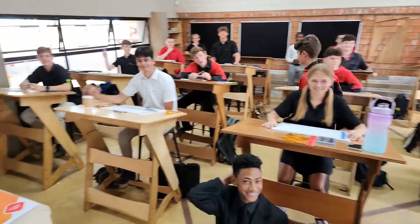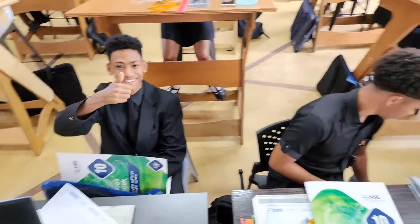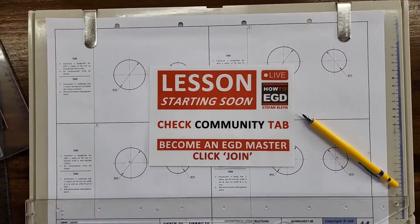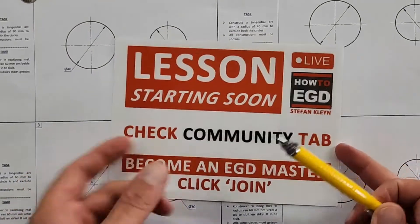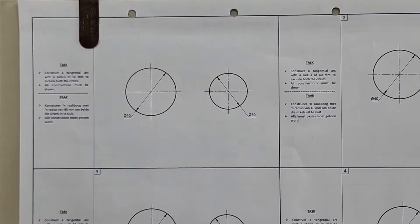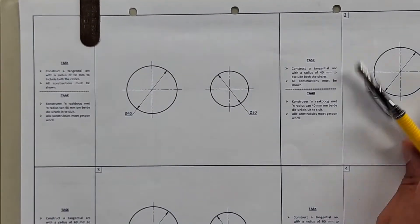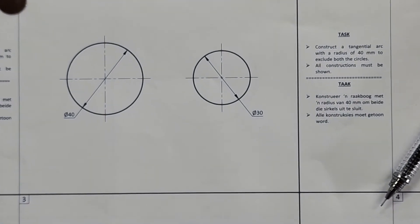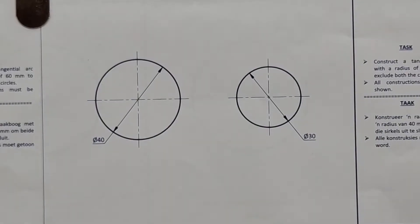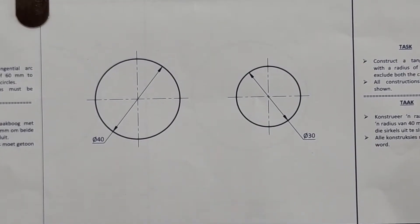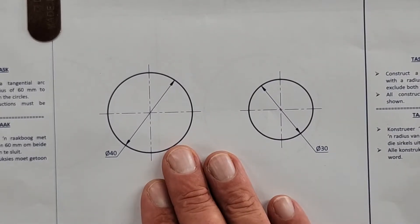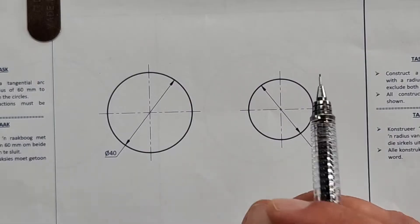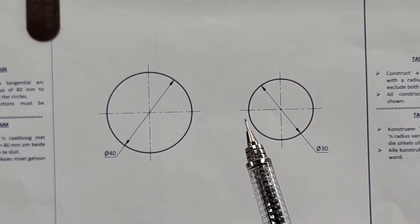Hey guys, this is a live lesson and we are going to be doing some interesting stuff. If you're interested in becoming an EGD master, pay attention. We're on page 48 of the HSE workbook and they're asking us to construct a tangential arc with a radius of 60 millimeters to include both circles, and we have to show construction detail.